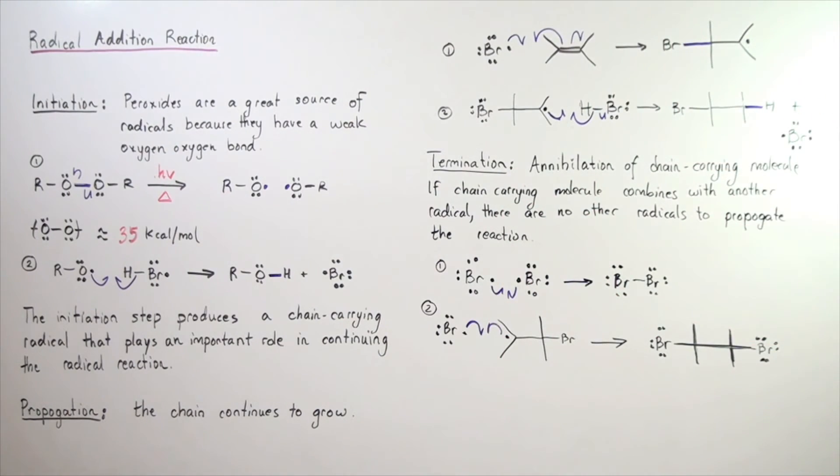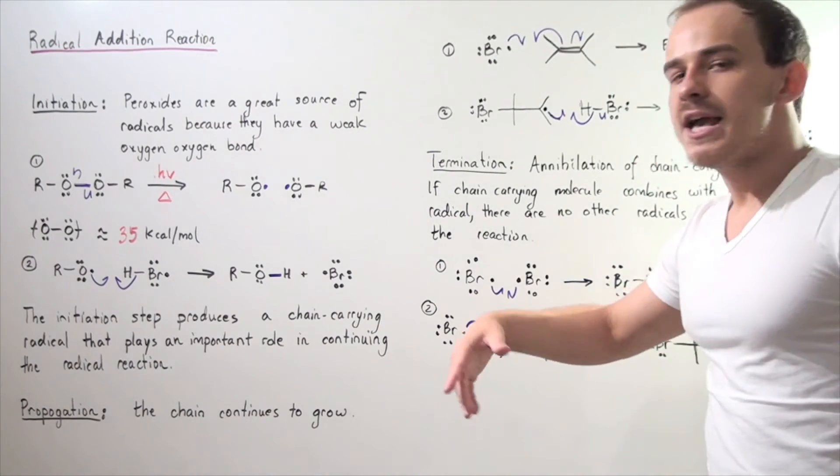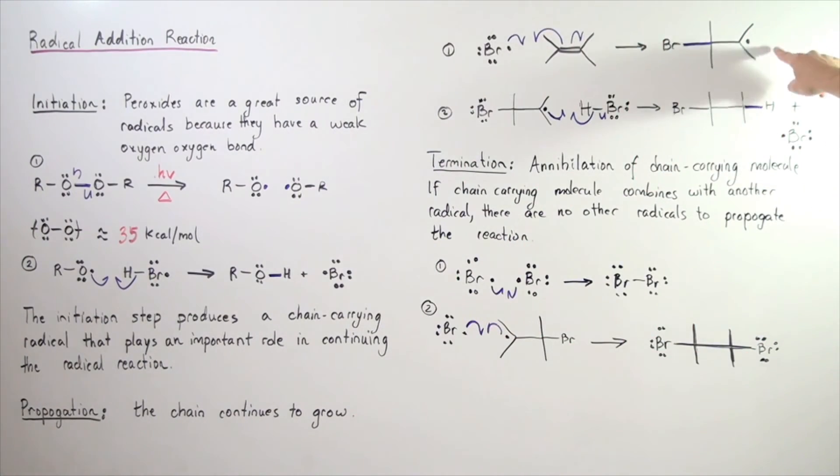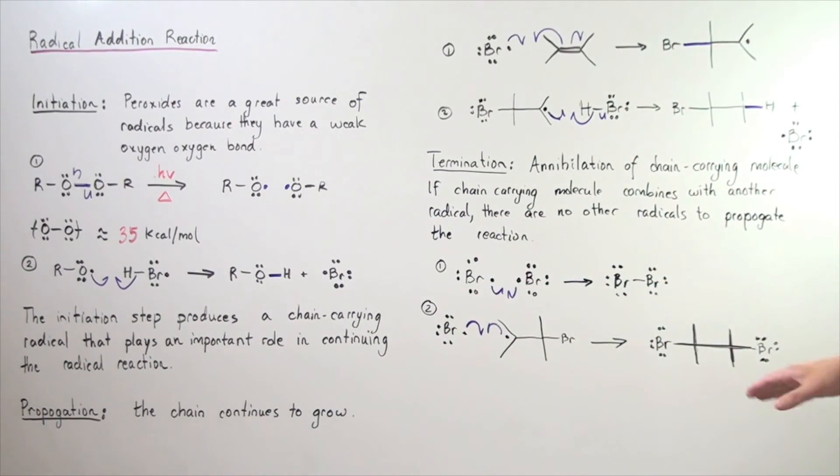In a second type of termination step, this same chain-carrying radical can react with the product of the propagation step in an exothermic fashion, forming the following halogen-containing hydrocarbon.